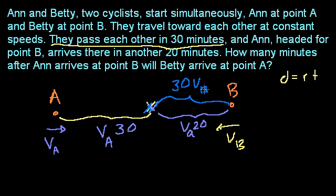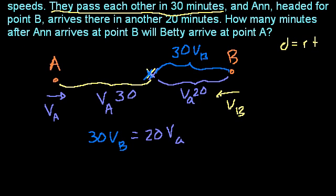So how can we do that? Well, we can already set up a relationship between VB and VA, because this distance is the same. It doesn't matter how fast you travel it, the distance doesn't change. So we know that 30 times Betty's velocity is equal to 20 times Ann's velocity, 20VA. And so if we wanted to express Ann's velocity in terms of Betty's velocity, let's just do it that way. If we divide both sides by 20, we get 3 halves of Betty's velocity is equal to Ann's velocity.